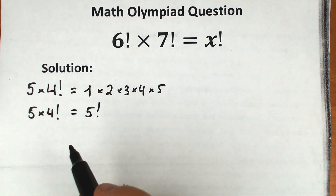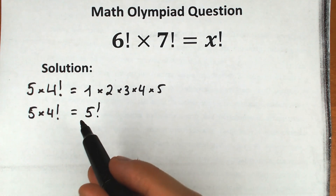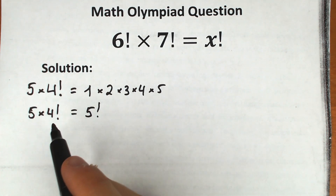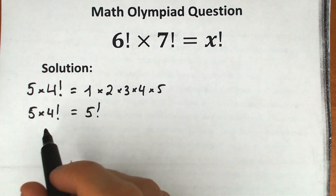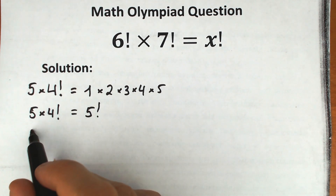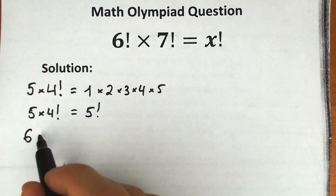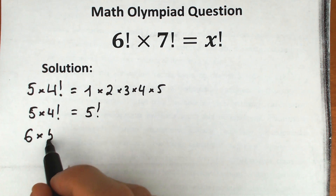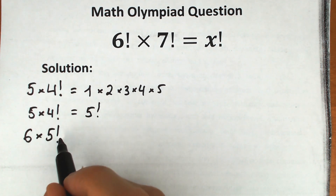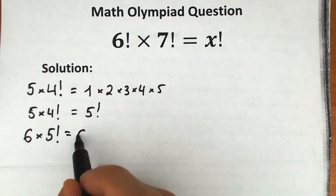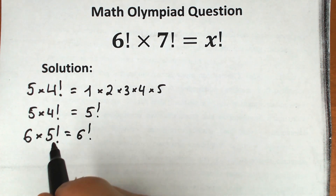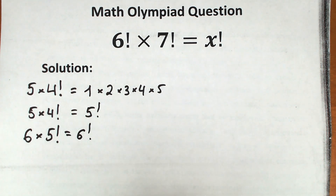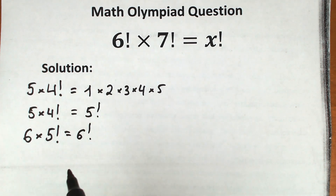This algorithm works if we add 1 to each value. For example, if we have 6 and multiply it by 5 factorial, we get 6 factorial. It works in every case — just keep this algorithm in mind.